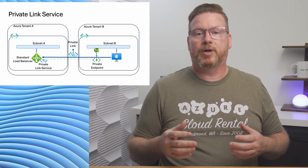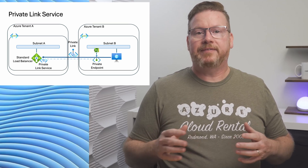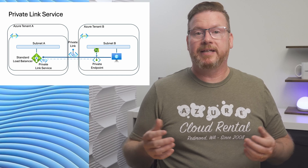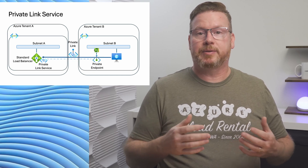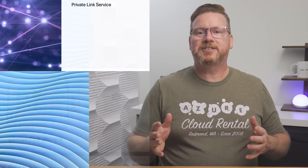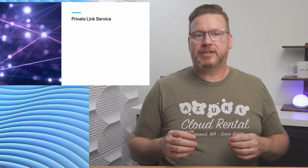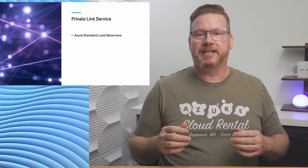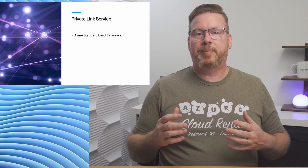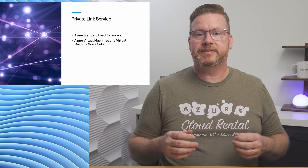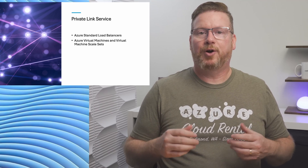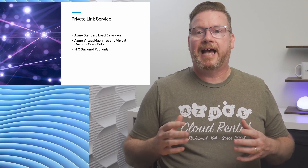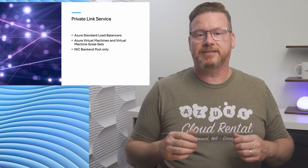All traffic between the private endpoint and the Private Link Service goes over the Microsoft network, never over the internet. And if there's connectivity from on-premises networks with ExpressRoute or VPN, connected clients can access the Private Link Service as well. There are some things to be aware of: Private Link Service is only supported on Azure Standard load balancers, not Basic, and the load balancer only supports virtual machines and VM scale sets.